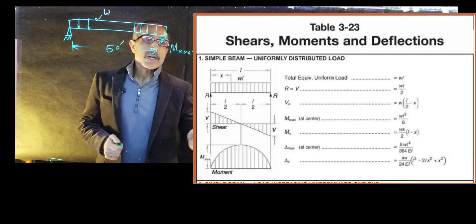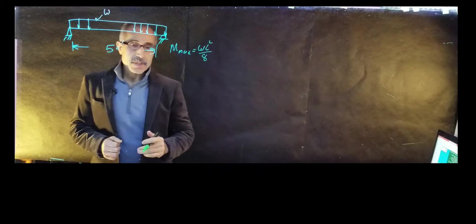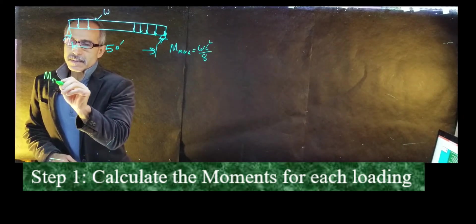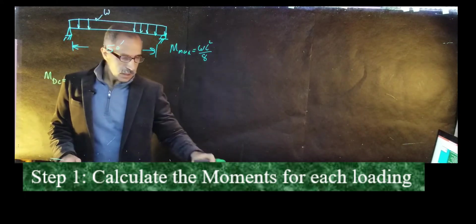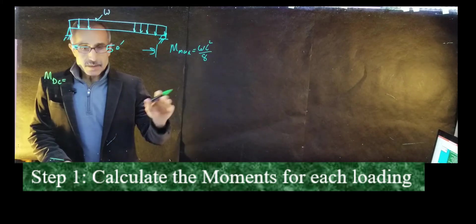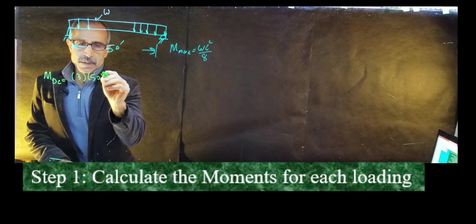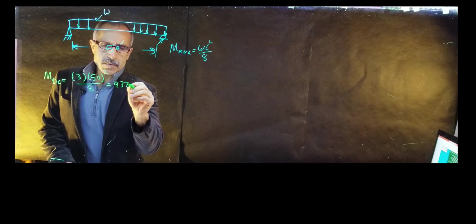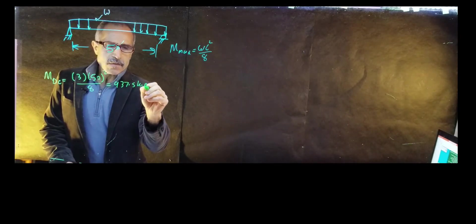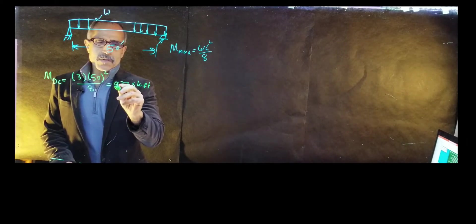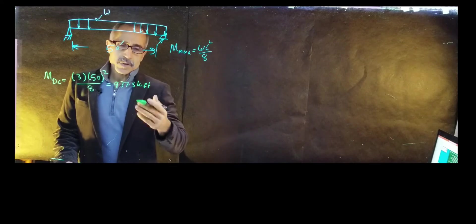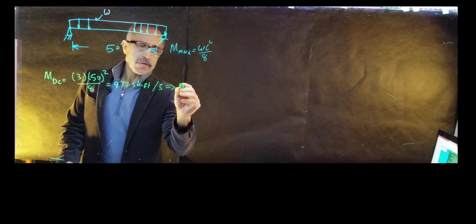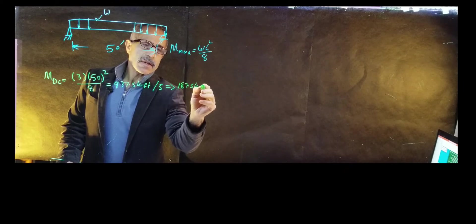Step one: calculate the maximum moment based on the given information. M_DC equals WL squared over eight. That's three times 50 squared divided by eight, which comes out to 937.5 kip-foot. This number is distributed over all five girders, so dividing by five gives 187.5 kip-foot per girder.